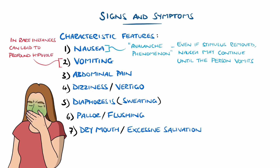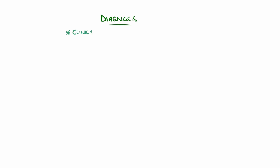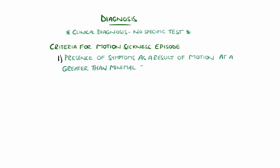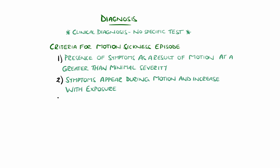A diagnosis is made clinically, meaning no specific test or imaging is needed. Episodes of motion sickness are characterised by four criteria: presence of the symptoms as a result of motion at greater than minimal severity; symptoms appear during motion and increase with exposure; they eventually stop after cessation of the stimuli.